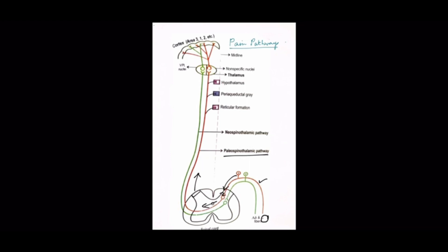In the brainstem, fibers reach the thalamus and project to three major nuclei groups forming three subsystems. In the thalamus, the third order neurons terminate mainly in the midline and intralaminar nuclei.